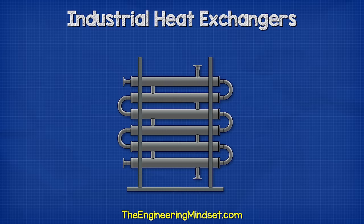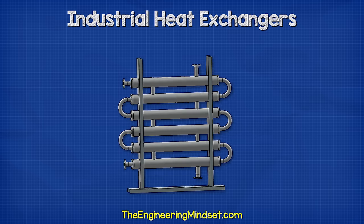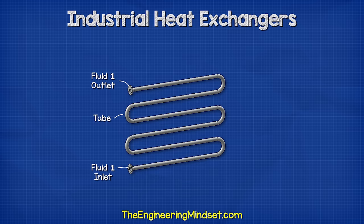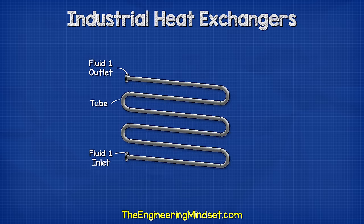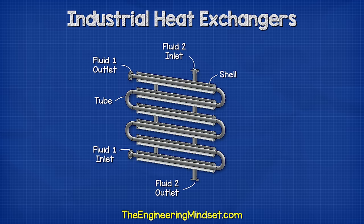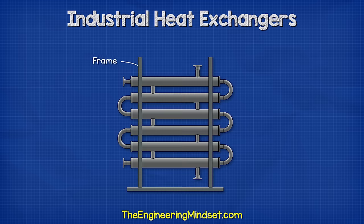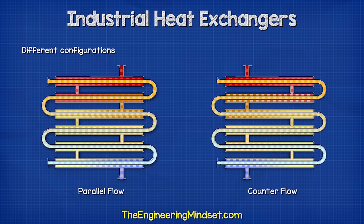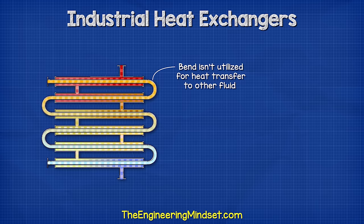Double pipe or tube-in-tube heat exchangers look something like this. Similar to the shell and tube design, we have a tube which runs back and forth between an inlet and an outlet, surrounded by a shell with another inlet and outlet. A metal frame holds the unit in place, and typically everything is made from stainless steel. One fluid flows through the tube and another through the shell, separated by the tube wall, transferring thermal energy through it. The different configurations result in different temperature profiles and heat transfer. In this design, the bend at each end isn't utilised for heat transfer, so some heat can be wasted there — however, manufacturing this heat exchanger is cheaper and easier.